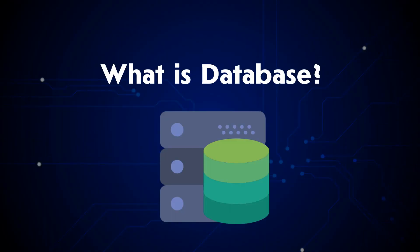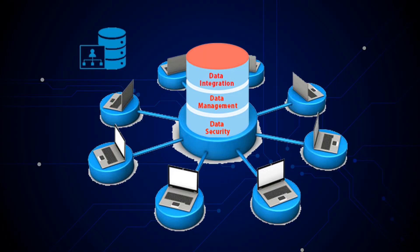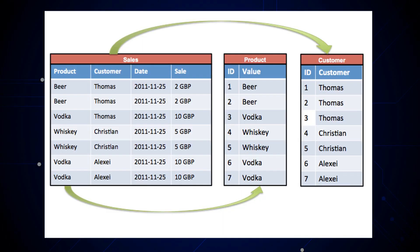A database is a collection of information that is organized so that it can be easily accessed, managed and updated. Data is organized into rows, columns and tables, and it is indexed to make it easier to find relevant information.